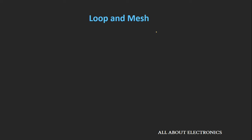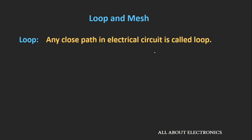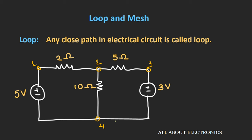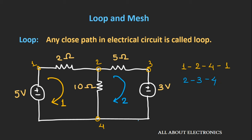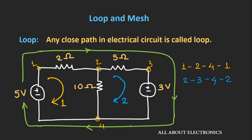Now let us see the concept of loop and mesh. Any closed path in the electrical circuit can be called a loop. This circuit contains 3 loops. The first loop: starting from node 1, move to node 2, then to node 4, and back to node 1. The second loop: starting from node 2, move to node 3, then to node 4, and back to node 2. The third loop is the outermost loop: starting from node 1, move to node 2, then node 3, then node 4, and back to node 1.